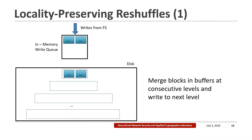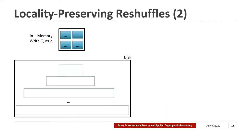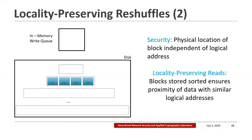For this, SQORAM employs level reshuffles. We merge blocks in buffers at consecutive levels and write them to the buffer in the next empty level. Specifically, we first read the blocks sequentially from the top-level buffer into the in-memory write queue, then sort the blocks on their logical addresses, and finally write them to the buffer in the second level. At this point, the top-level buffer is again empty and writes can proceed. During this process, write access patterns are still hidden because the physical locations of blocks in the new level are independent of their logical addresses, and the sorting is performed in memory, which is not visible to the adversary.